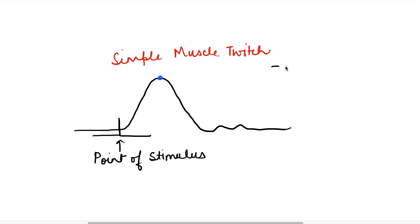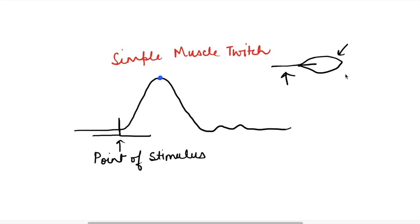When we take out a nerve-muscle preparation from a frog and stimulate the nerve, the muscle contracts and we can record this contraction and relaxation of the muscle. When the nerve is stimulated and the muscle contracts and relaxes, the record obtained is known as a simple muscle twitch.